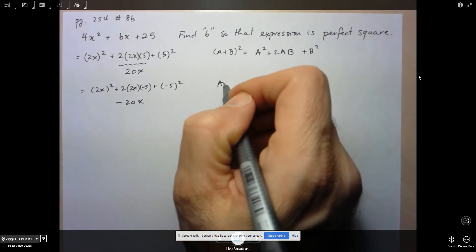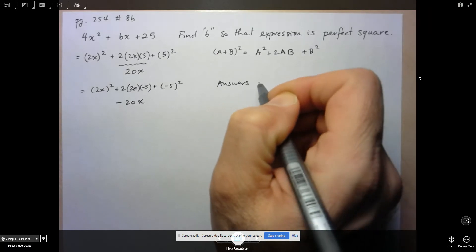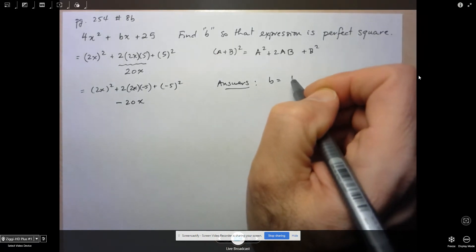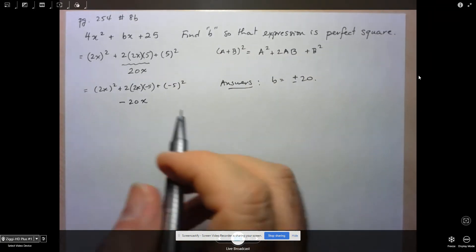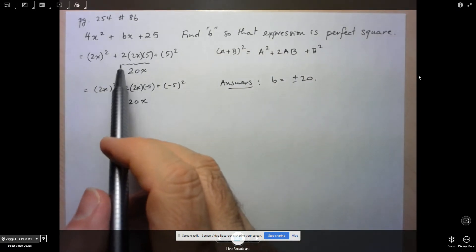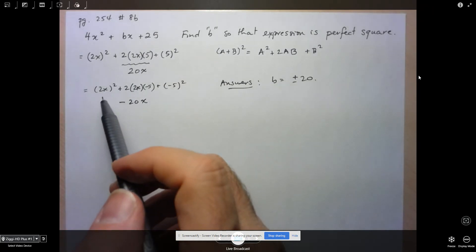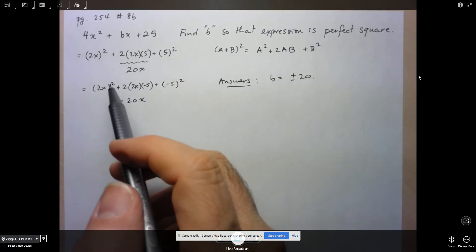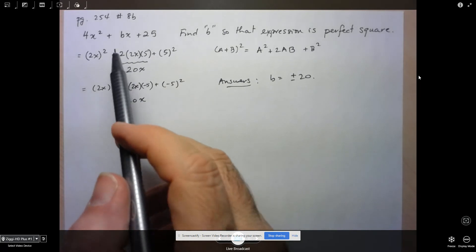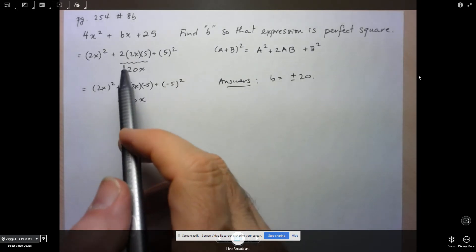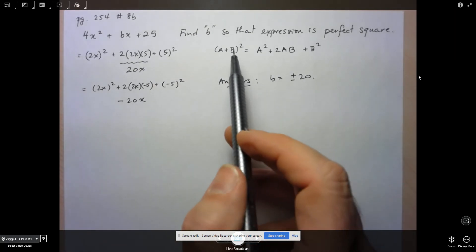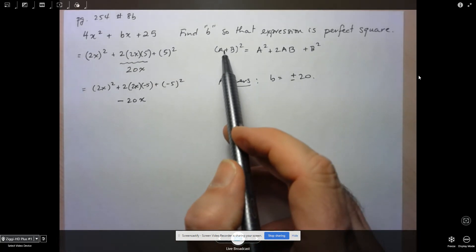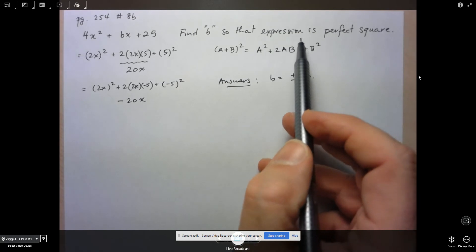So what are my final answers? We have that b can be equal to plus or minus 20. So there's actually two possible answers. Now notice here how I actually wrote everything out. Eventually, as you start becoming more comfortable with some of these perfect squares, or in particular, these special factorizations, you can probably do this in your head. But the main thing here is that in order for something to factor to a perfect square, it has to fit this model here.